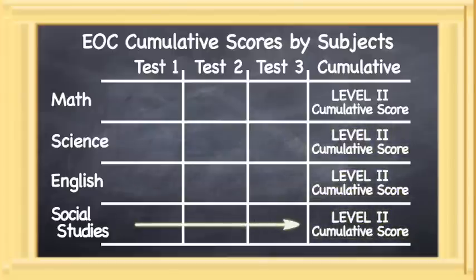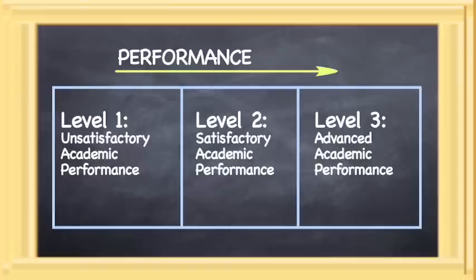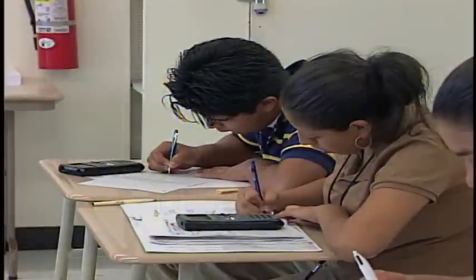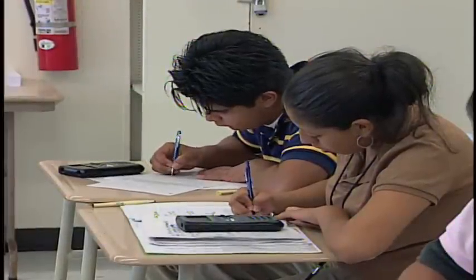A student must also achieve a minimum score on each EOC exam for the score to count towards the cumulative score. This minimum score will be set by the TEA within a reasonable range of the passing performance. For certain graduation plans, a score above the minimum score is required. To understand how cumulative scores will affect high school students,